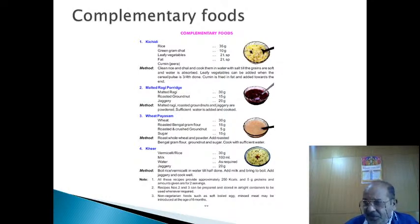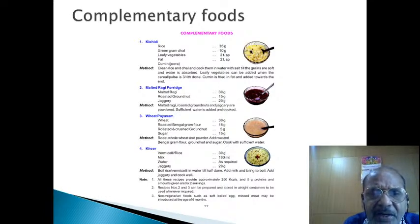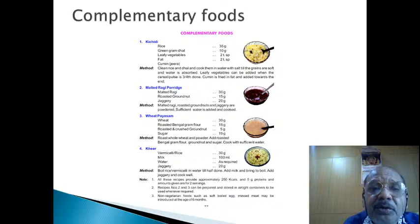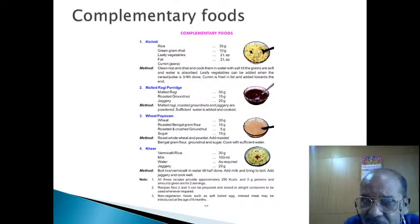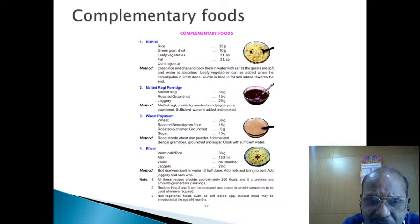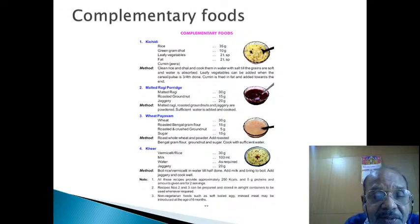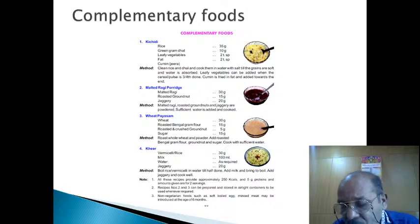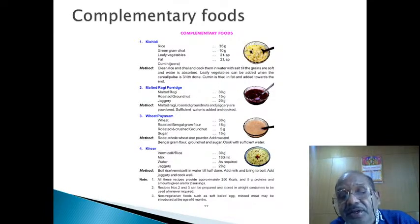NIN has given clear specifications regarding amounts for weaning foods — for instance, khichdi: specific amounts of rice, green gram dal, leafy vegetables, and fat are recommended. Remember these are supplementary foods, not substitutes for breast milk. Good weaning foods include khichdi, malted ragi porridge, wheat porridge, and kheer — these are accepted well by the infant and do reasonable supplementation, which is essential once the child becomes six months old.